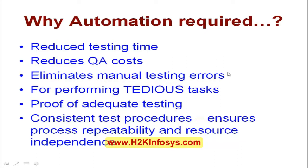Automation eliminates manual testing errors. For example, say you are performing manual testing and found a bug. While logging the bug, you might commit a mistake — because we are human beings. We perfectly found a bug, but by logging the defect we could commit a mistake. Those kinds of manual testing errors will be avoided in automation testing, because it is very alert.